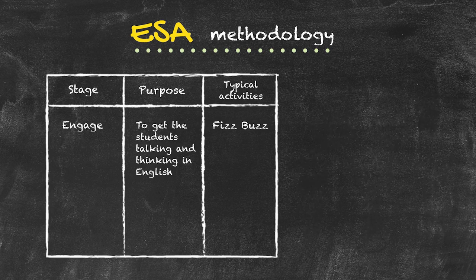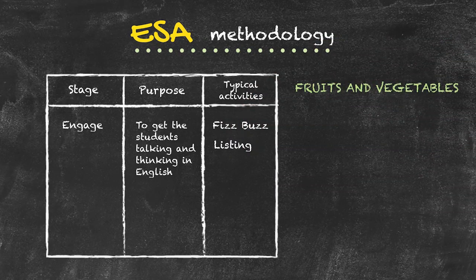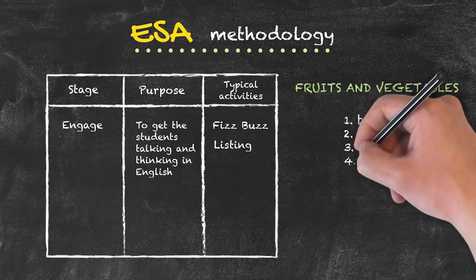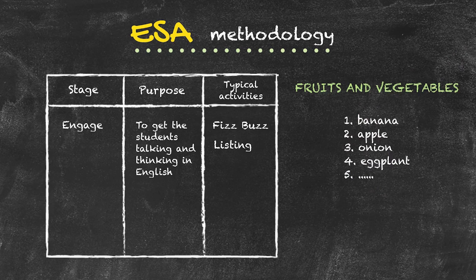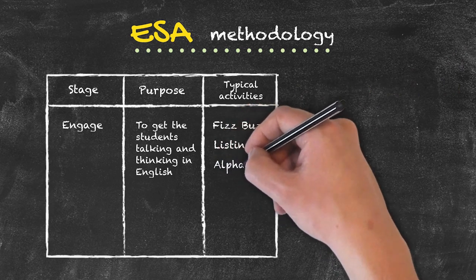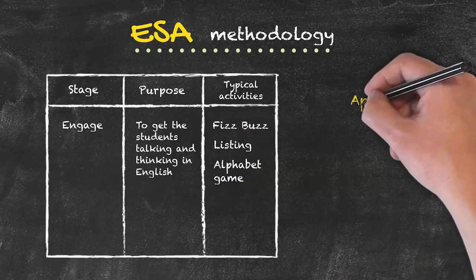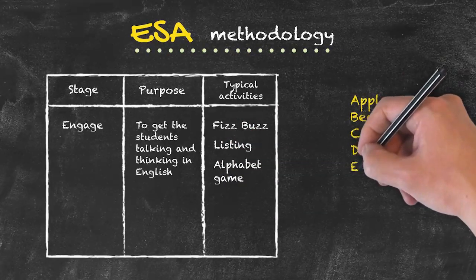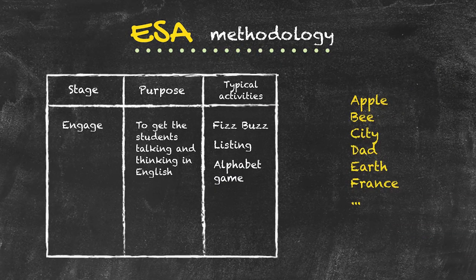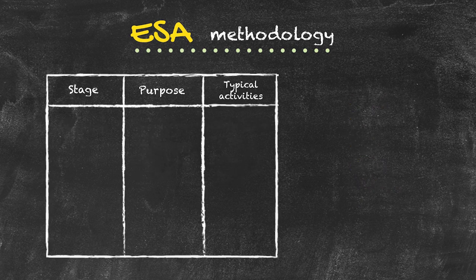A second idea is to get students to create lists. We give them a topic, let's say fruit and vegetables, and they go around the class producing a list of various things. Another idea may be something like an alphabet game, where they have to create nouns following the letters of the alphabet. Each of these ideas is purely and simply to get the students talking and thinking in English. They are interactive in that students have to communicate, and we need to ensure everyone in the class has said something by the end of the engage phase.